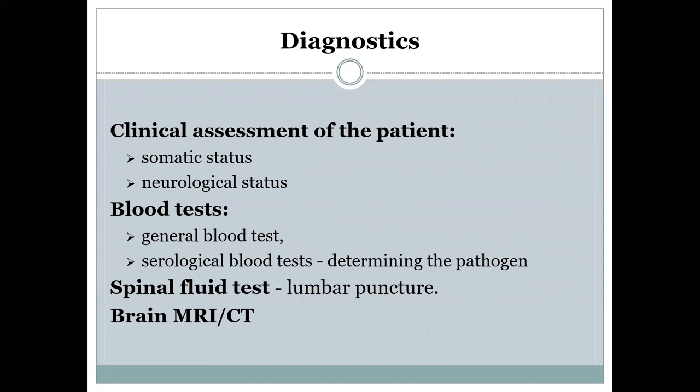The main diagnostic approach is clear. It includes clinical assessment of the patient — gathering all information about the somatic and neurological status of the person. We also use blood tests, including general blood tests and serological blood tests, which help determine the pathogen and cause of the disease. Additionally, we include spinal fluid testing via lumbar puncture, and if needed, MRI or CT depending on the diagnosis we are pursuing.